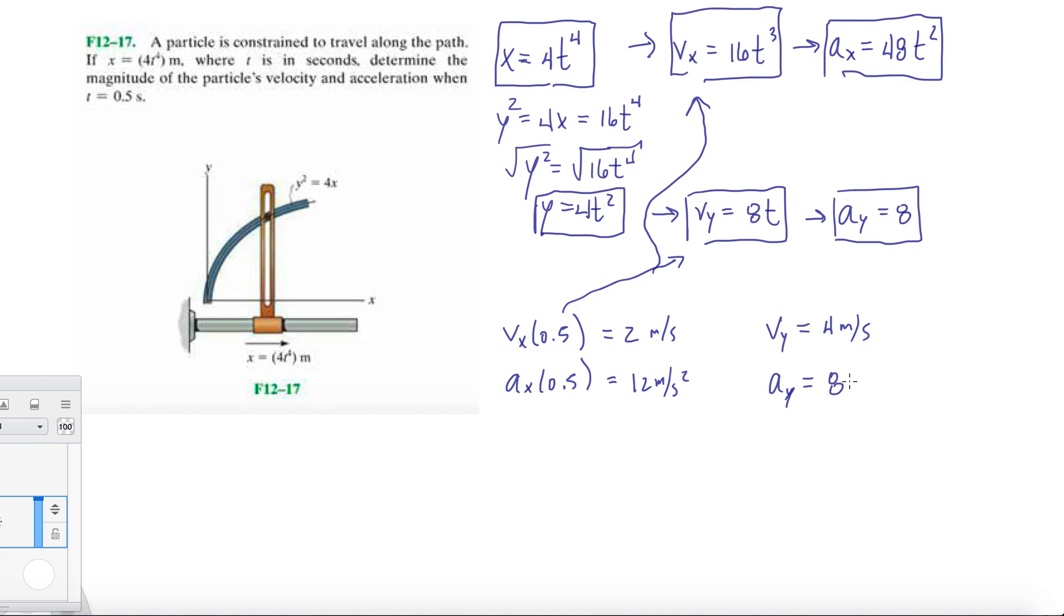And then a_y we get 8 meters per second squared because it's just constant. Now that we've done the bulk of the work here, we're just going to take the magnitude of the velocity and the acceleration.